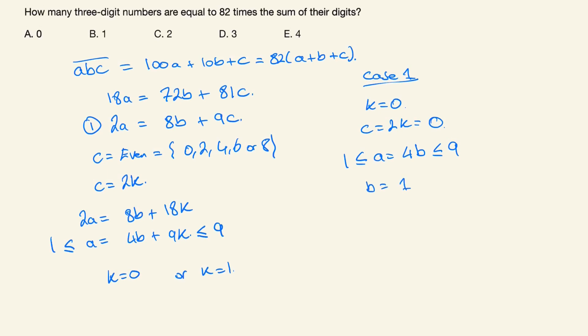We either have B is 1 or 2. If B is 1, this means A is 4, and if B is 2, this means A is 8. Therefore the three-digit solutions here are 410 or 820.